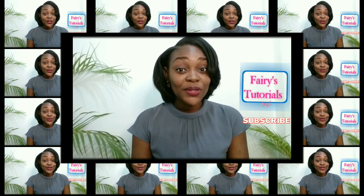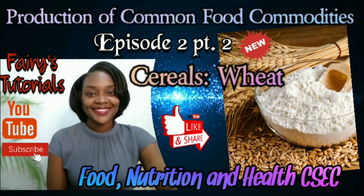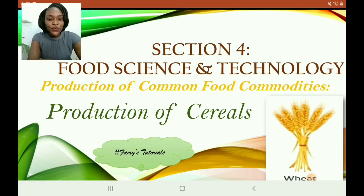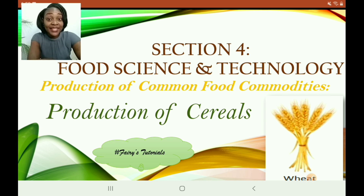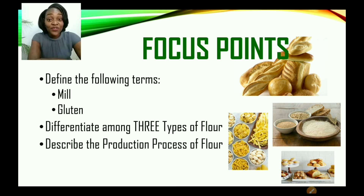Hi guys, welcome back to Therese Tutorials. Section 4: Food Science and Technology — Production of Common Food Commodities. Today we'll be exploring the production of cereals, specifically wheat. We'll be looking at definitions for two key terms — meal and gluten — the different types of flour, and also the production process of flour.